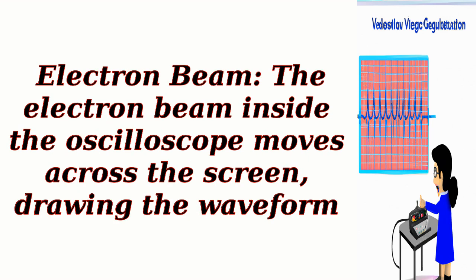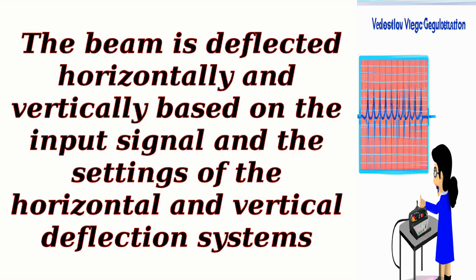Electron Beam: the electron beam inside the oscilloscope moves across the screen, drawing the waveform. The beam is deflected horizontally and vertically based on the input signal and the settings of the horizontal and vertical deflection systems.